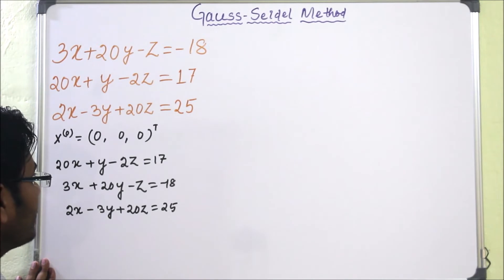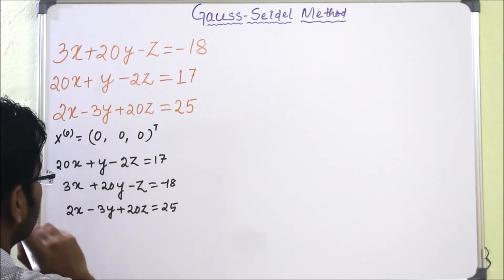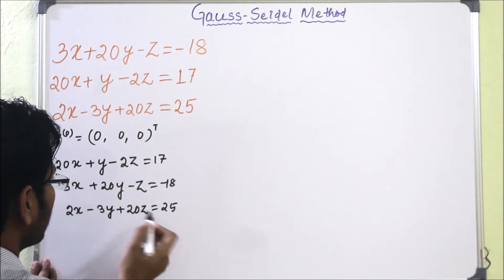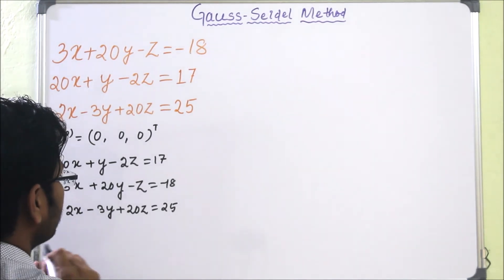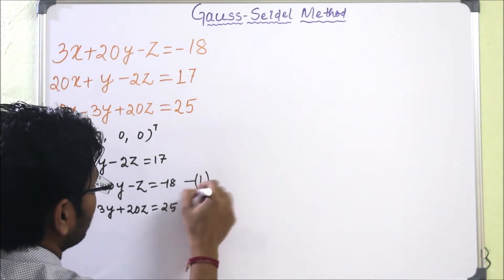So how to do that? It is very simple. We have to convert the equations: x from the first equation, y from the second equation, and z from the third equation. So we can write this system of equations in iteration form.